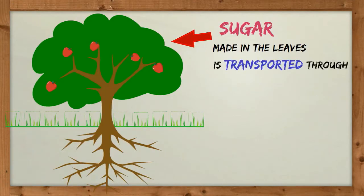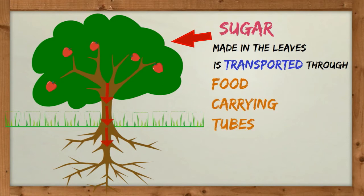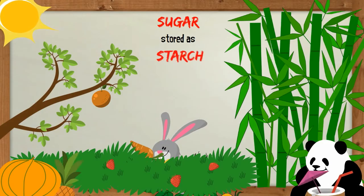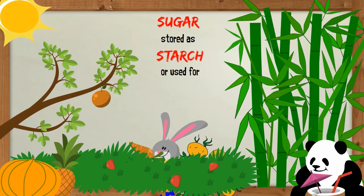Sugar is transported through the food-carrying tubes from the leaves to all plant parts. Some of the sugar is stored as starch while some are used for respiration.